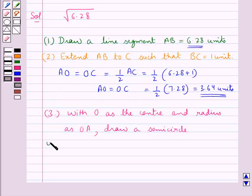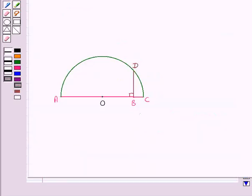Then in the next step, we draw BD perpendicular to AC. So this is BD perpendicular to AC such that this perpendicular is intersecting the semicircle at point D.